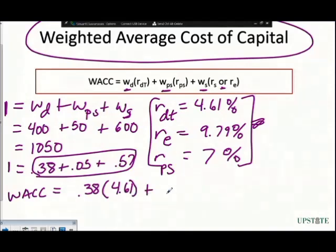Plus, we're going to add on to that our weight on preferred stock, which is at 5%, 0.05, and that's multiplied by 7. And then we're going to add on to that our weight on equity, which is 0.57, and that is multiplied by our return on equity, which is 9.79%.